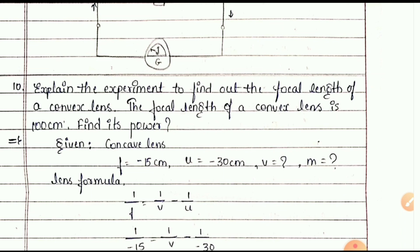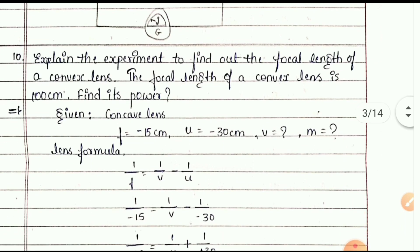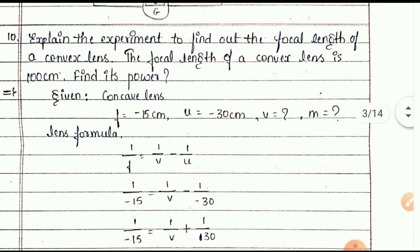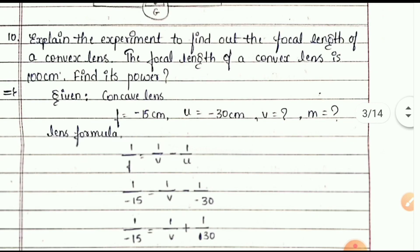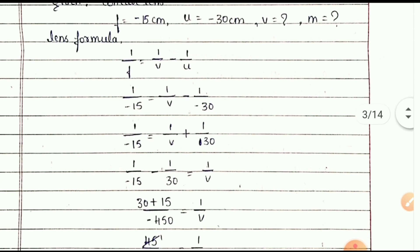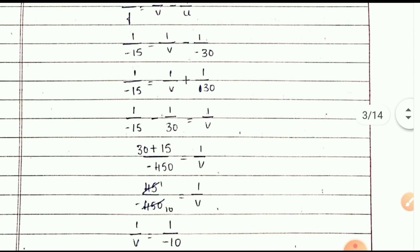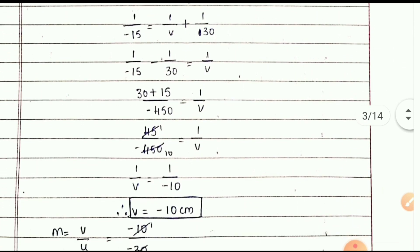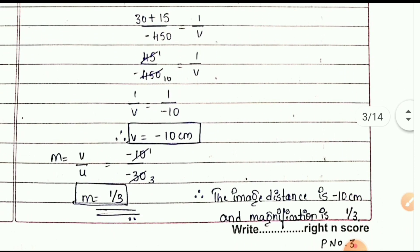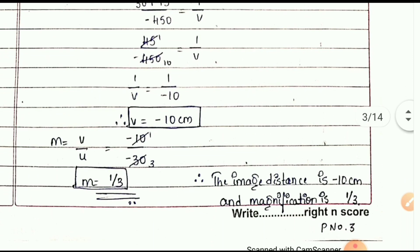Explain the experiment to find out the focal length of a convex lens. The focal length is 100 centimeters. Using the formula 1/f = 1/v − 1/u, with v equal to minus 10 centimeters, the magnification m = v/u, so m equals 1/3.